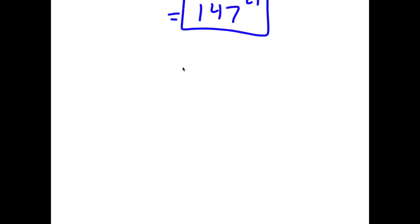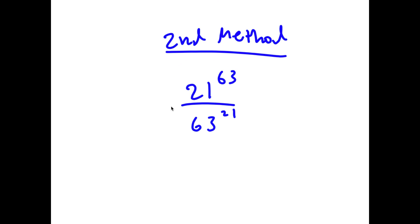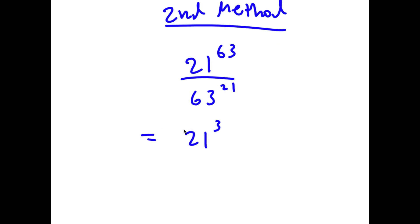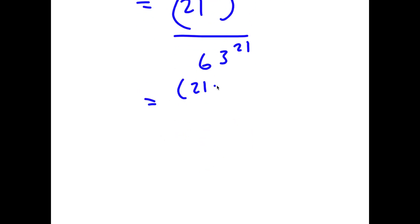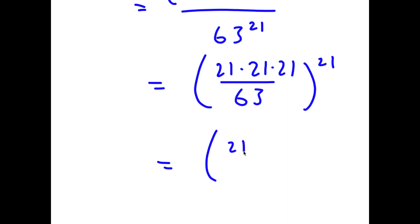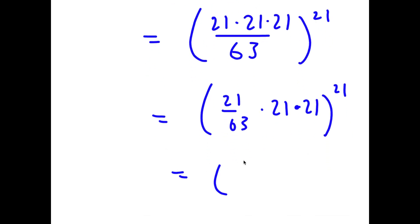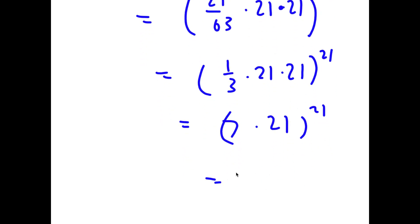Now I have a second method of solving this problem. Again, I start with 21 to the power of 63 over 63 to the power of 21. This time I rewrite 21 to the power of 63 as 21 to the power of 3, all to the power of 21, over 63 to the power of 21. This equals 21 times 21 times 21, all to the power of 21, over 63 to the power of 21, which is 21 times 21 times 21 over 63, to the power of 21. Since 21 over 63 is one-third, I have one-third times 21 times 21 to the power of 21. One-third times 21 is 7, so I have 7 times 21 to the power of 21, which is again 147 to the power of 21.